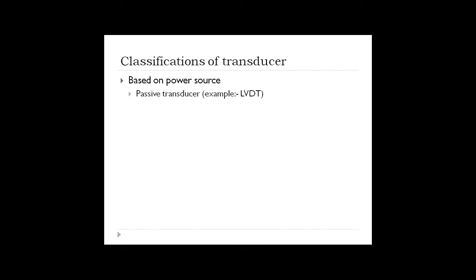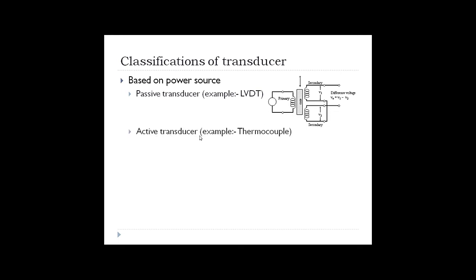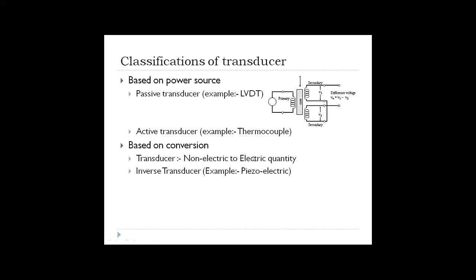Classifying transducers based on power source: a passive transducer needs an external power supply for its operation — for example, an LVDT (Linear Variable Differential Transformer) needs a power source. An active transducer does not need any power source for its operation. For example, a thermocouple works on the principle of the Seebeck effect, where thermoelectric EMF is generated when two bimetals are connected together. No external supply is needed to generate this thermo-EMF in a thermocouple.